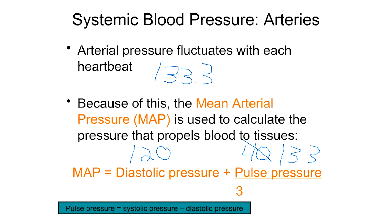When blood pressure is high and hypertensive, pressure in the arteries and all other vessels is elevated, which can be very damaging to tissues. The second example is low blood pressure of 60 over 40. Sometimes with low pressure we don't have enough pressure in the vessels to push blood to the tissues, which is also damaging — so there's a range we need to maintain.